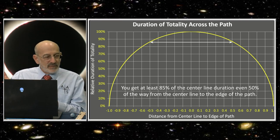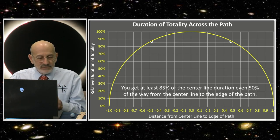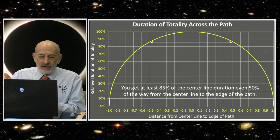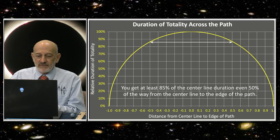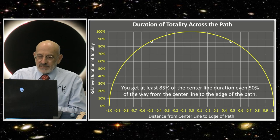The center of the path in New England goes through Canada. It doesn't cross New Hampshire. Coos County is south of the center line, but it doesn't really matter because as this graph shows, you can be halfway from the center to the edge and you still are getting more than 85% of the duration of totality.